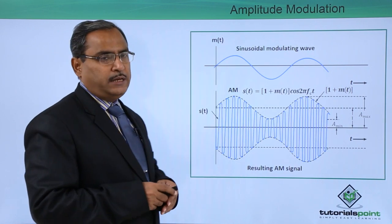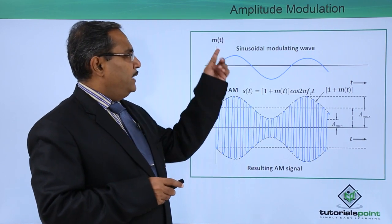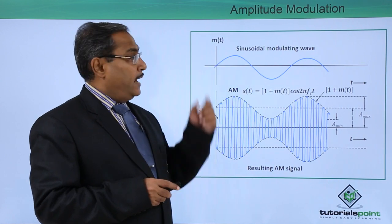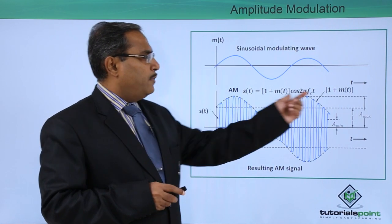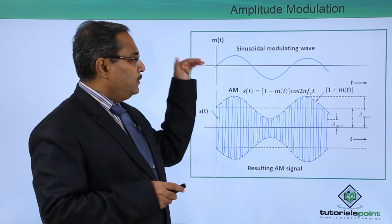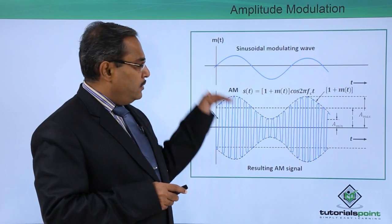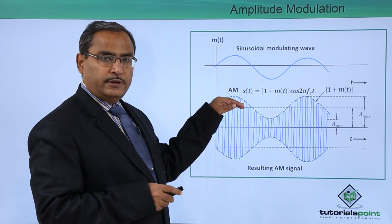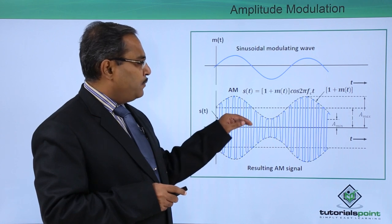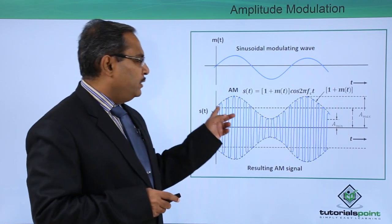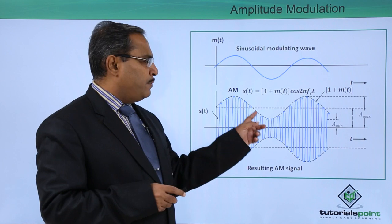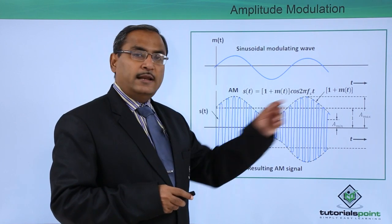What will be the respective expression for it? Here we are having m(t). And if I perform 1 plus m(t), then this particular line will have a shift of 1 unit. So ultimately what will happen? This 1 plus m(t) will be the signal like this.